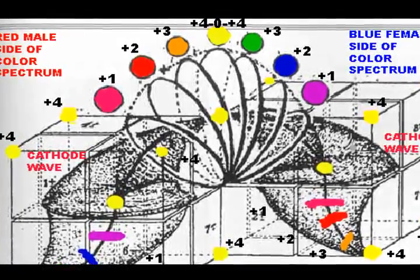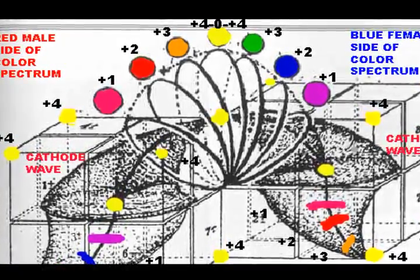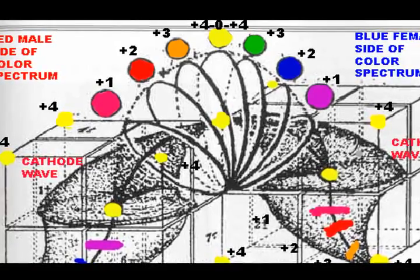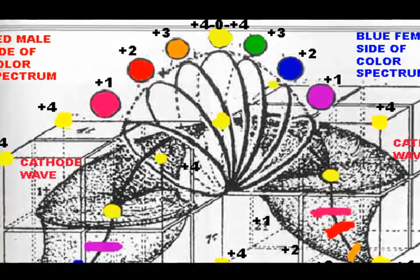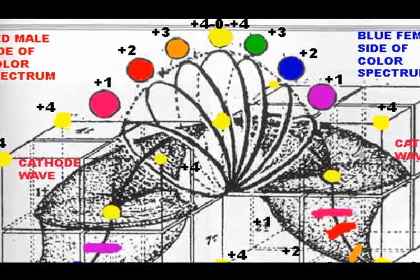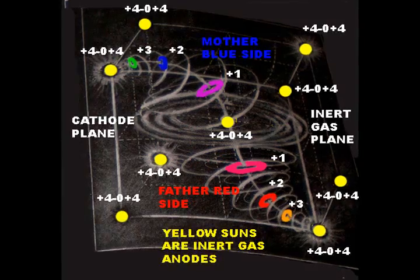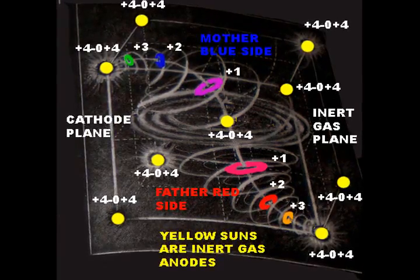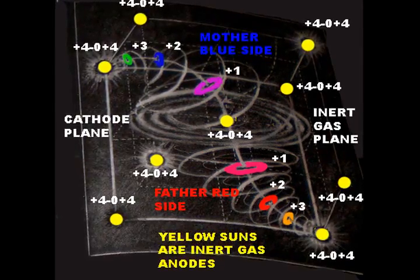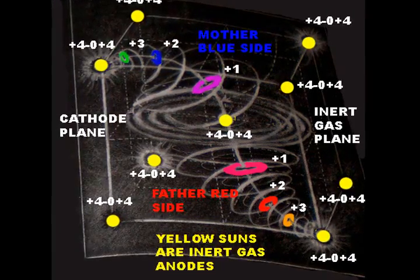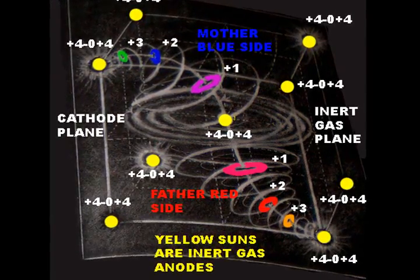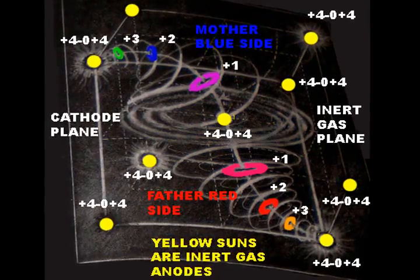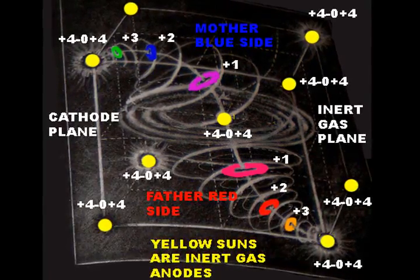The wave amplitude is a shared locking position marked plus four, zero, plus four for male and female vortices, creating an anode-cathode sphere with male in one hemisphere and female in the other hemisphere, divided by an equatorial inert gas cathode plane of stillness.